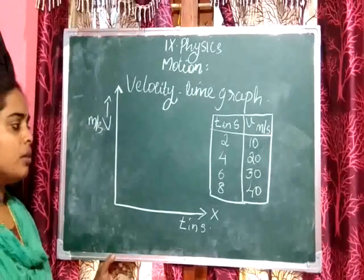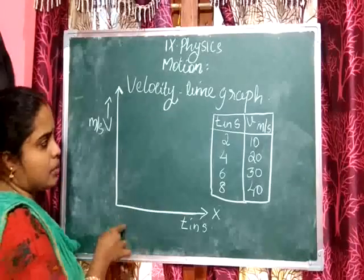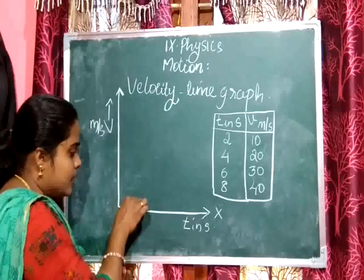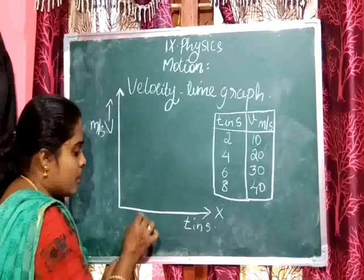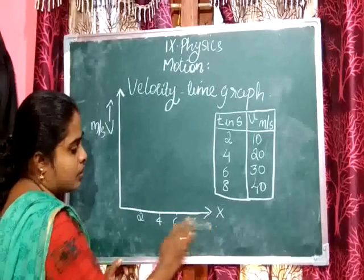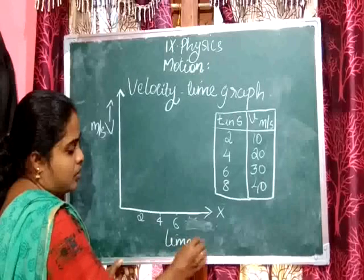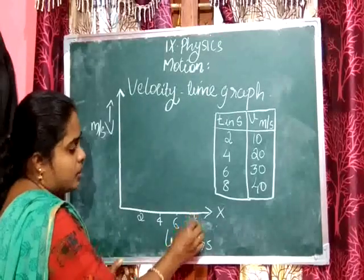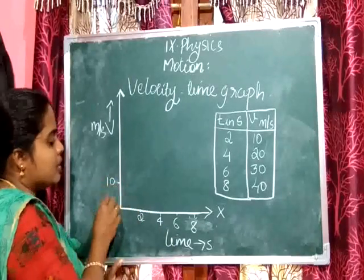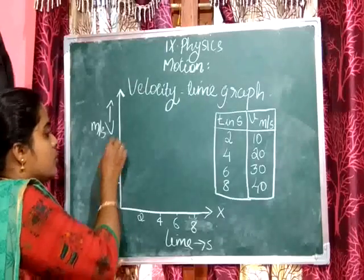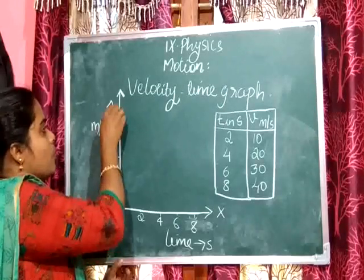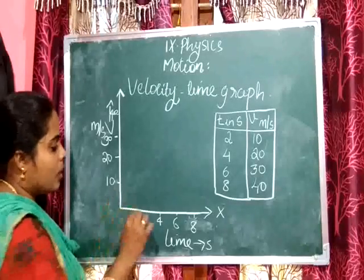Let us mark the points on the graph. Time is along the x-axis, so we take the scale as 1 centimeter equals 2 seconds — marking 2, 4, 6, and 8 seconds. On the y-axis, 1 centimeter equals 10 meter per second — marking 20, 30, and 40 meter per second.